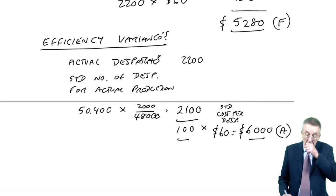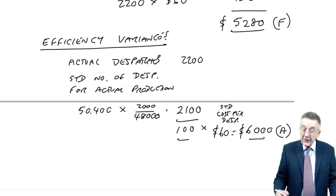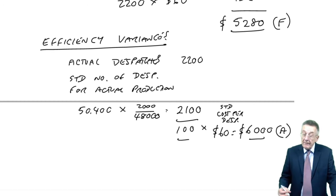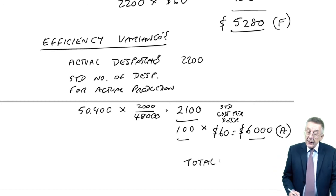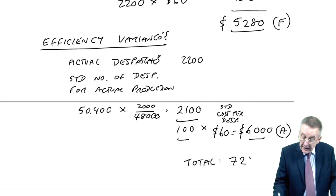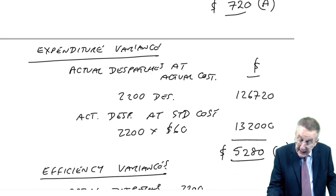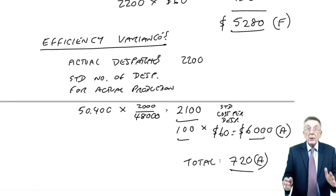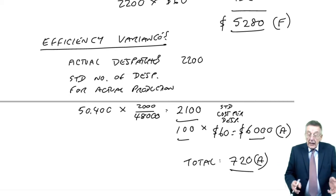And does it check? Excuse me. 6,000 adverse, 5,280 favorable. The two together, the net figure, is going to be the difference of 720 adverse, which I think is what we got earlier. Yes, it is. It does check, we have analyzed it.